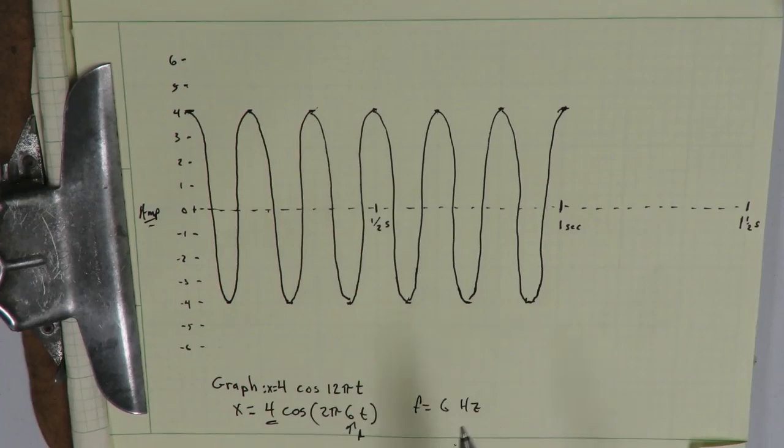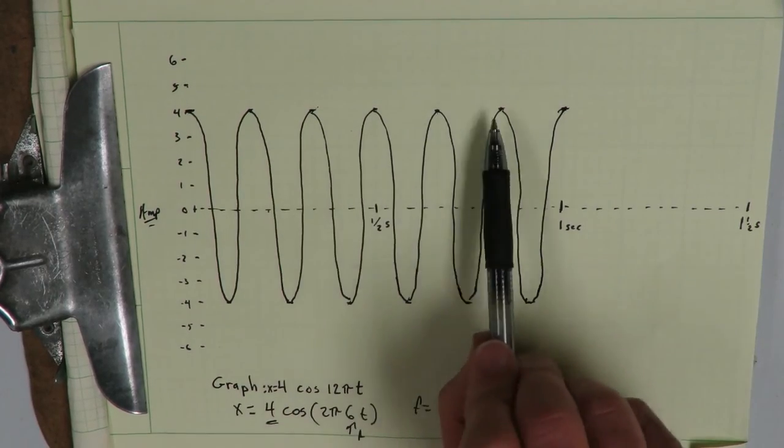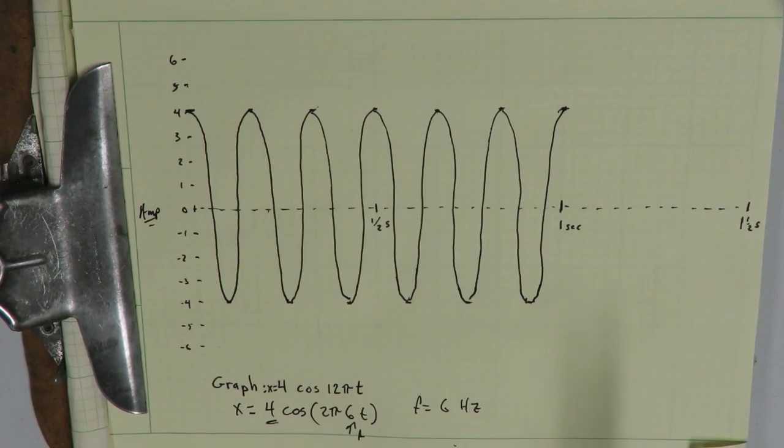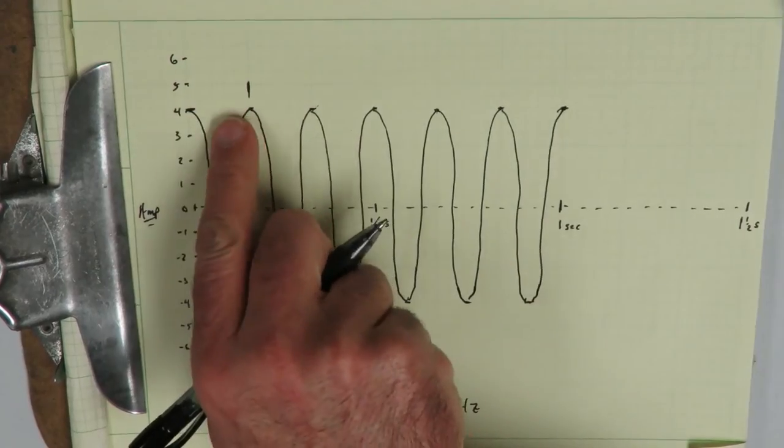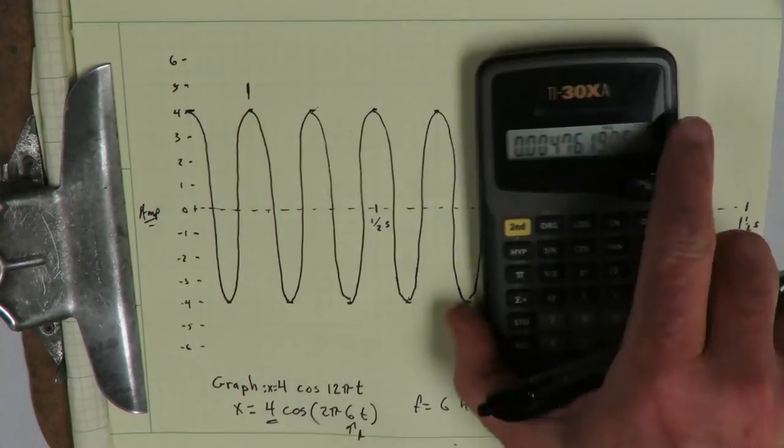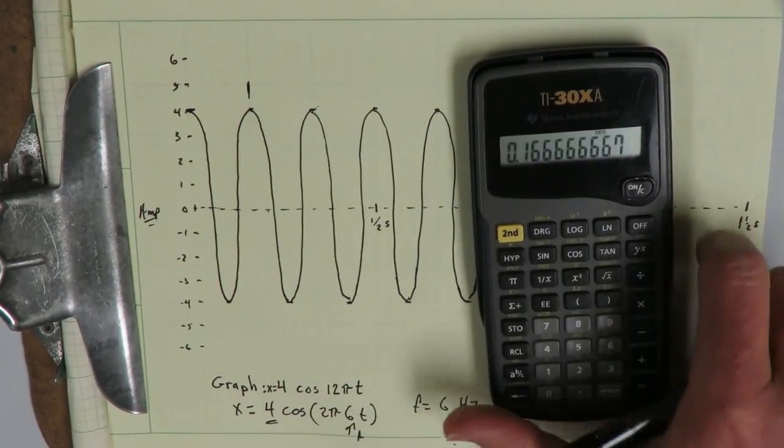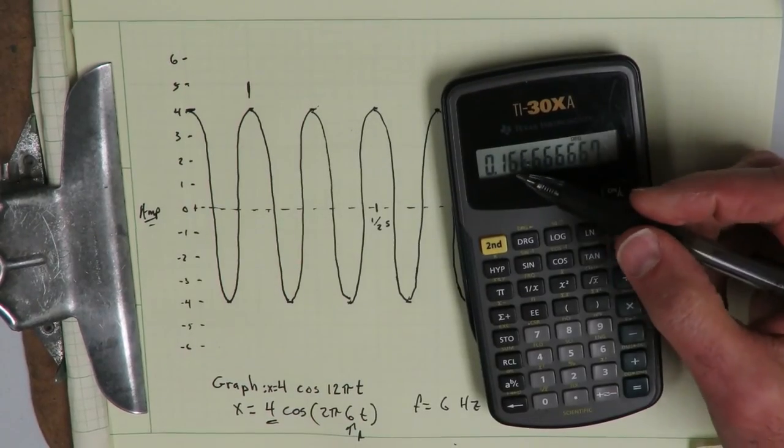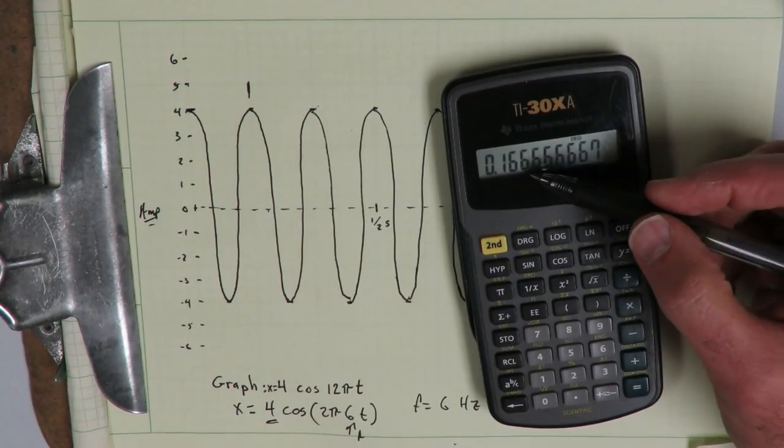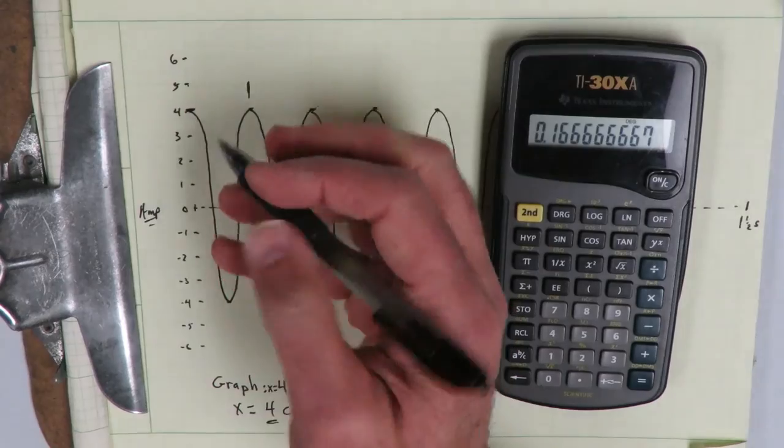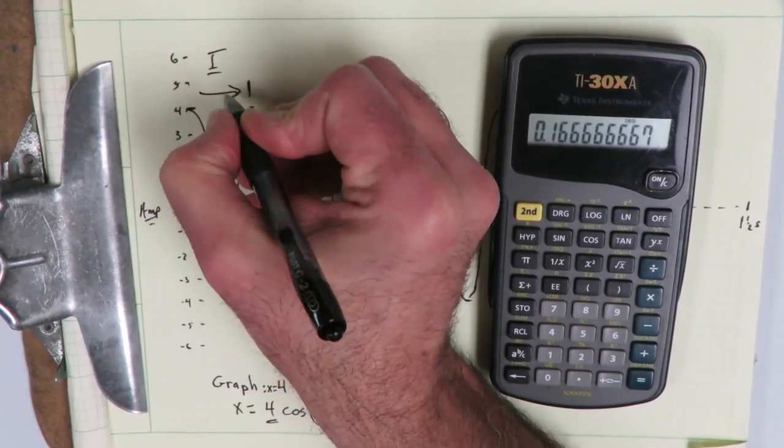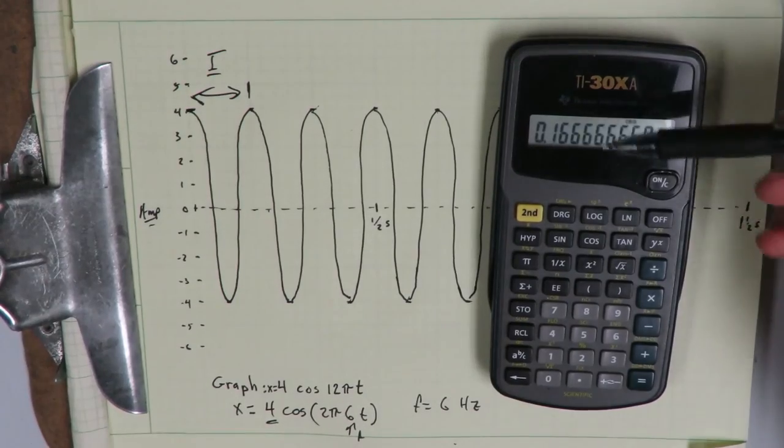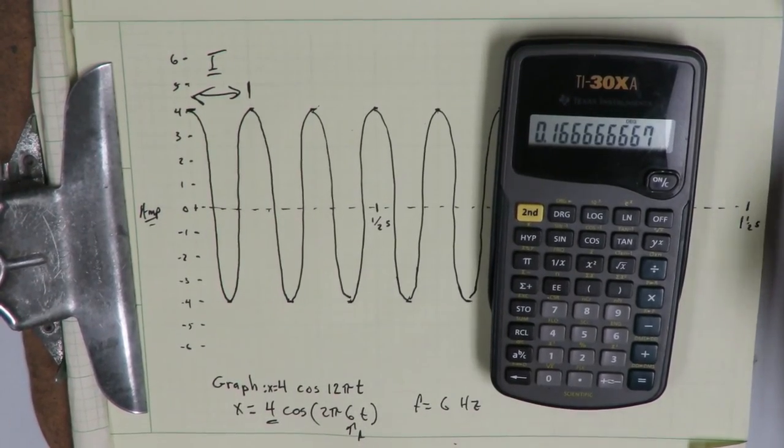Right? So we wound up with a waveform where we have 1, 2, 3, 4, 5, 6 cycles in 1 second, which means 6 hertz. If you work out the math on this, you can figure out that this is 1 sixth of a second. One sixth of a second comes out to be 0.167 seconds per cycle. That's the period. And that's it.